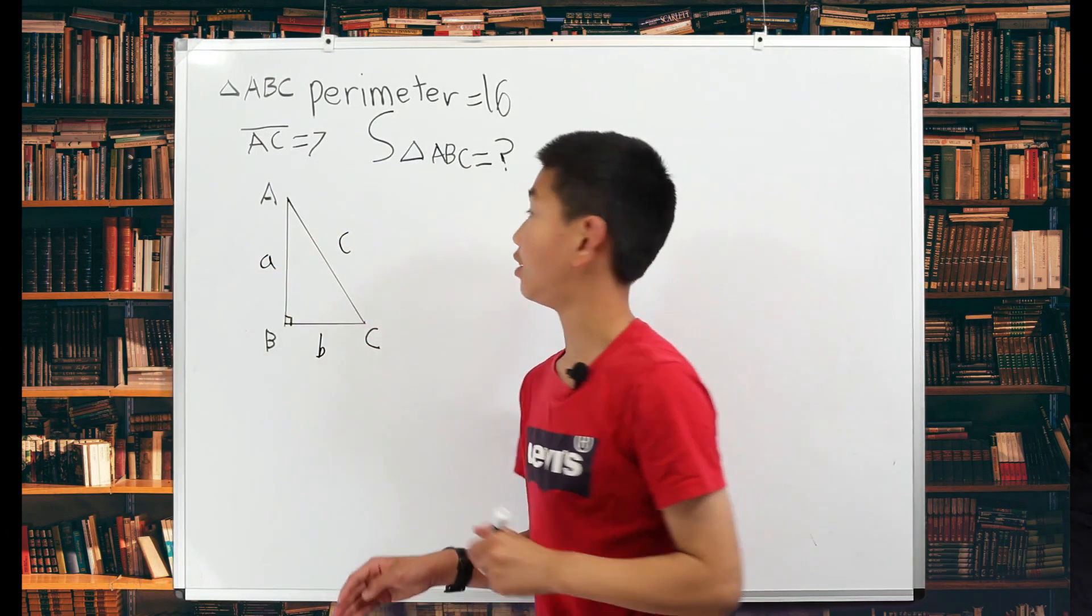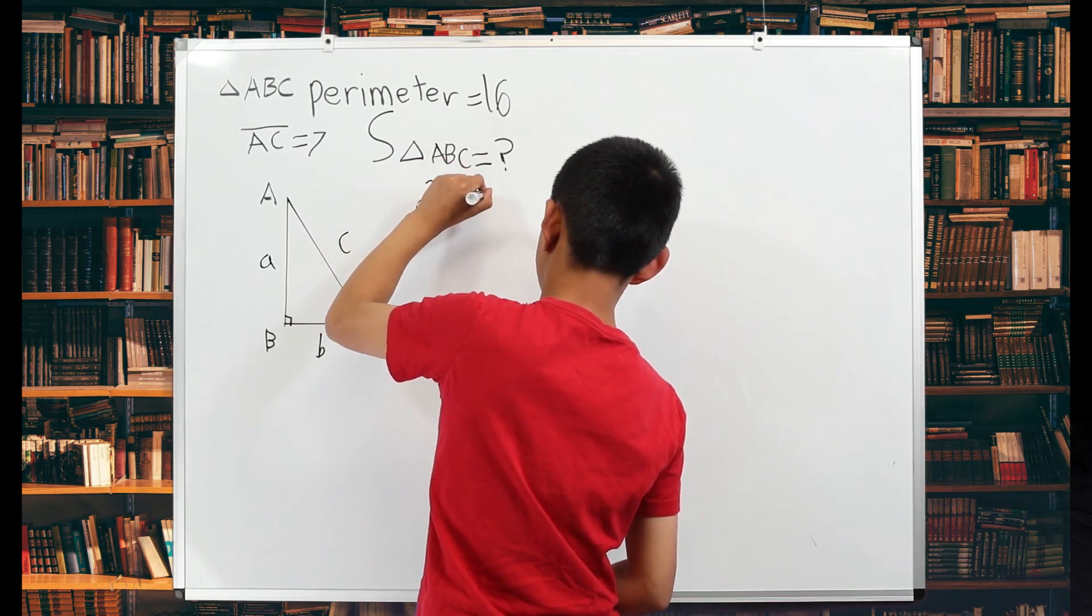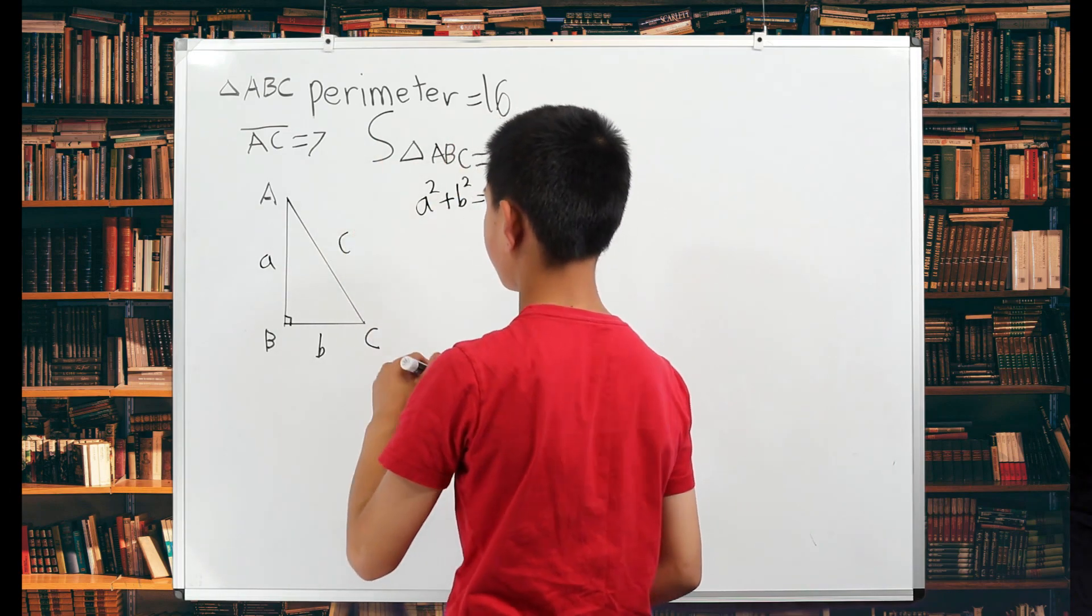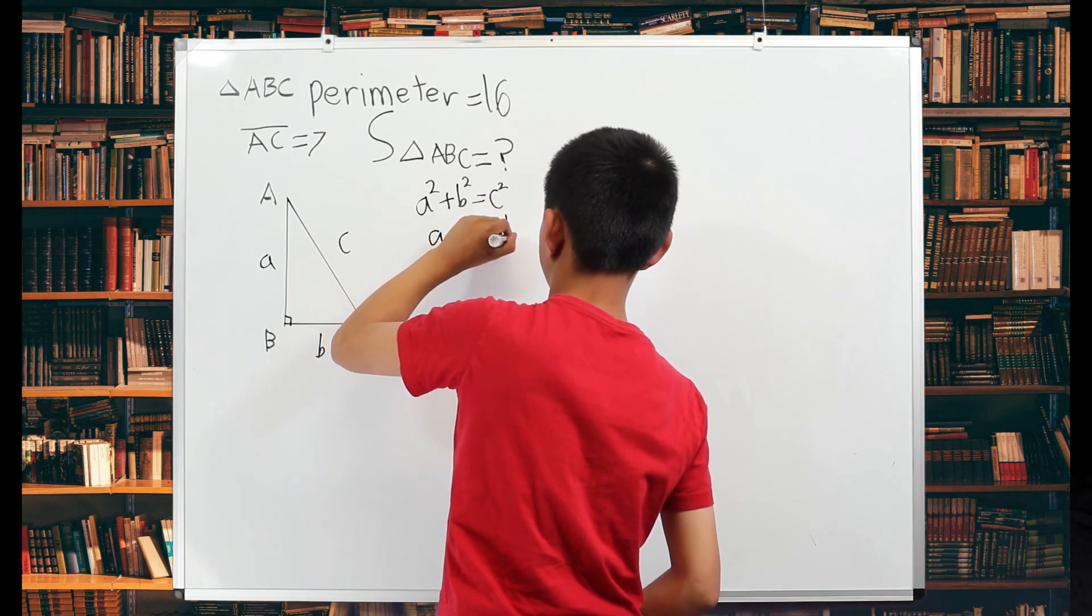So we already know one formula. A squared plus B squared is C squared. And since we are given the perimeter which is 16, A plus B plus C is equal to 16.